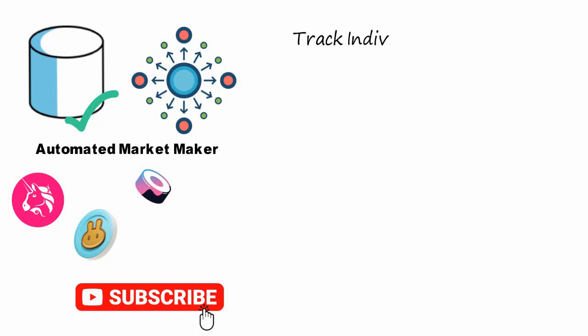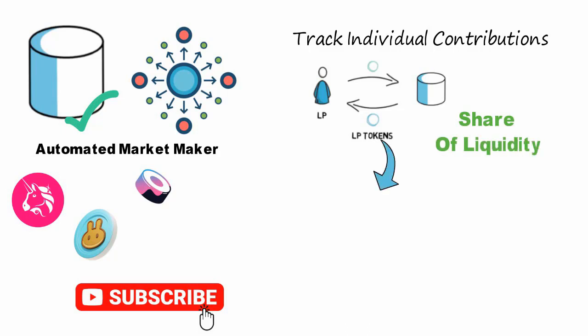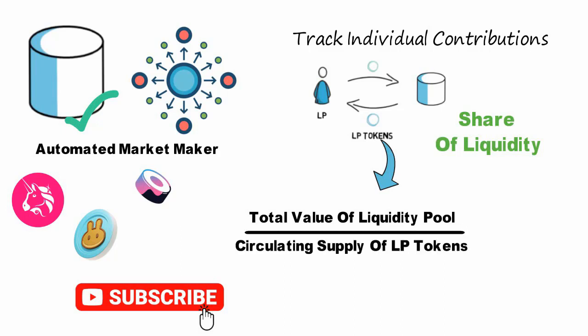LP tokens are used to track individual contributions to the overall liquidity pool, as LP tokens held correspond proportionally to the share of liquidity in the overall pool. At the most basic level, LP tokens work on the following formula: total value of liquidity pool divided by circulating supply of LP tokens equals the value of one LP token.